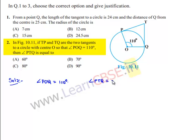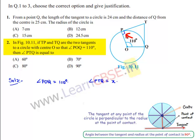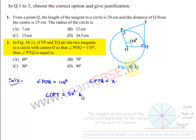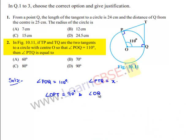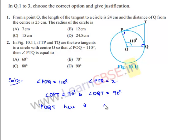We know that at the point of contact the radius is always perpendicular to the tangent. Therefore, angle OPT = 90 degrees and angle OQT = 90 degrees. Observing the figure, we see that P, O, Q, T form a quadrilateral.